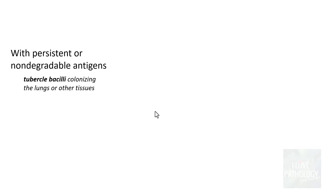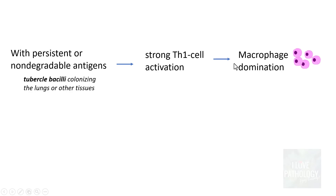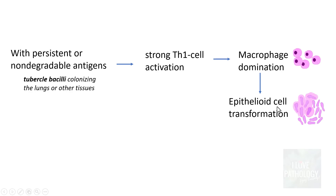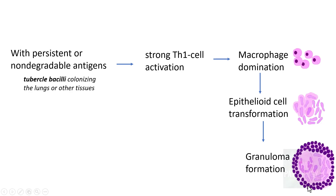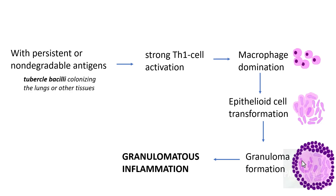When there is a persistent or non-degradable antigen — for example, Mycobacterium tuberculosis bacilli colonizing the lungs or other tissues — this acts as a persistent antigen causing a very strong T helper 1 cell activation, recruiting large numbers of macrophages. When macrophages are not enough to tackle the bacilli, they transform into epithelioid cells with more cytoplasm and elongated pale nuclei, clustering together to form a granuloma surrounded by a cuff of lymphocytes. This is granulomatous inflammation, discussed in detail in an earlier video.